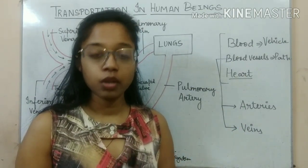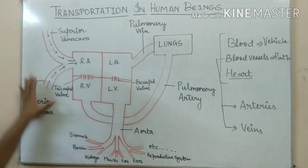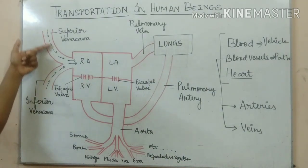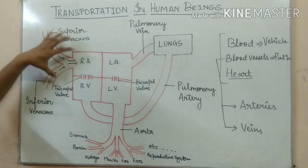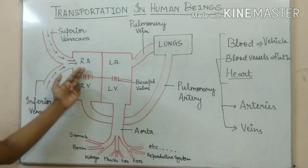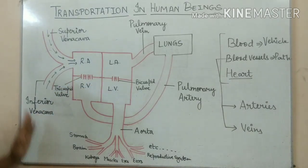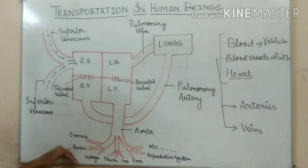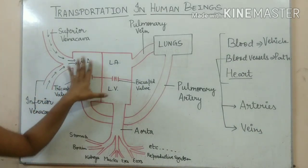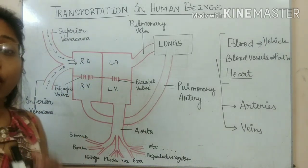Now let's understand how this transportation system works. I have made a schematic diagram to explain this. You can see blood comes from the upper parts of the body — the parts above the heart — to the first chamber of the heart. Similarly, from the parts below the heart, blood also comes to the first chamber of the heart.